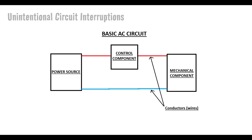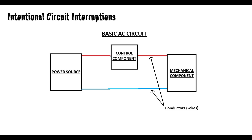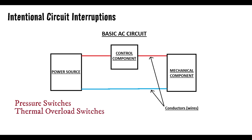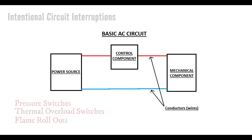You can also have intentional shutdowns of the circuit, where the problem has nothing to do with the circuit itself — it's actually external — but some safety device is wired into the circuit and designed to shut it down under those circumstances. We're talking about high or low pressure situations in your refrigerant lines, thermal overload switches that shut the circuit down on very high temperatures, flame rollouts. There's a variety of safety devices that will shut circuits down due to problems that have nothing to do with the circuit at all. But even those external problems can still be detected through the circuitry itself.